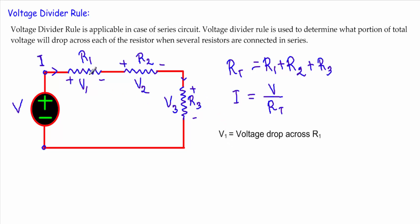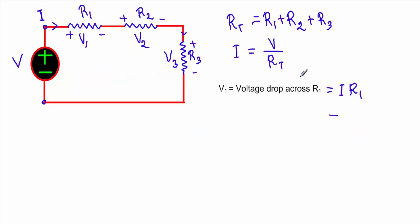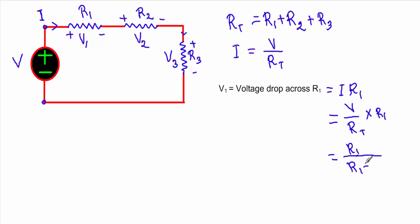To calculate the voltage drop V1 across R1 we use Ohm's Law — V1 equals the current through the resistor times its value. The current through R1 is I and the resistor value is R1. We previously calculated I equal to V divided by RT, so V1 equals V divided by RT, multiplied by R1. Rearranging, V1 equals R1 divided by RT, where RT is the series combination R1 plus R2 plus R3.